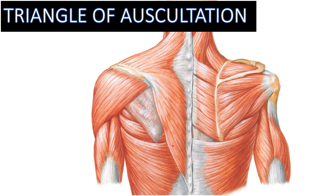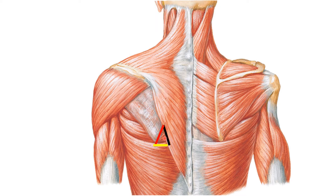Let us see the boundaries of it. Here you can identify the triangle of auscultation. Looking from the posterior aspect, you can see the triangular area which is present posterior and medial to the scapula, lateral to the trapezius muscle, and above the latissimus dorsi. Let us discuss these boundaries in detail.